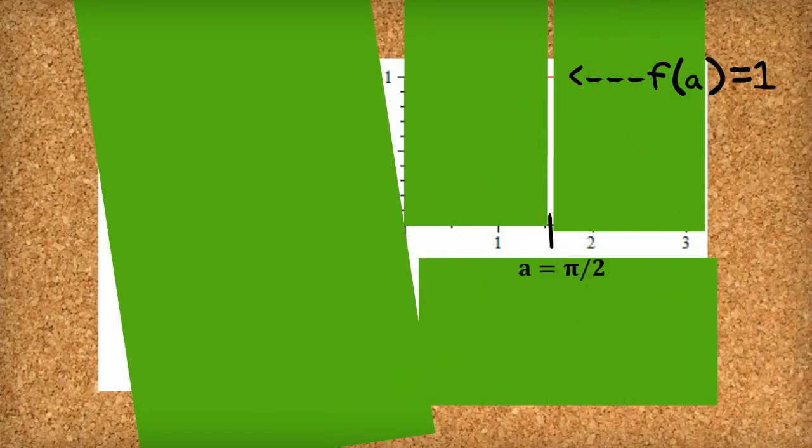To understand Taylor Series, imagine this game. I've graphed a function and pinned it onto corkboard, and then covered up most of the function with green cardboard. In fact, there's only one point that we can see of the function. I'm going to call the x point a, a equals pi on 2. That's where we go up from, and you can see here that the value of f of a is equal to 1.